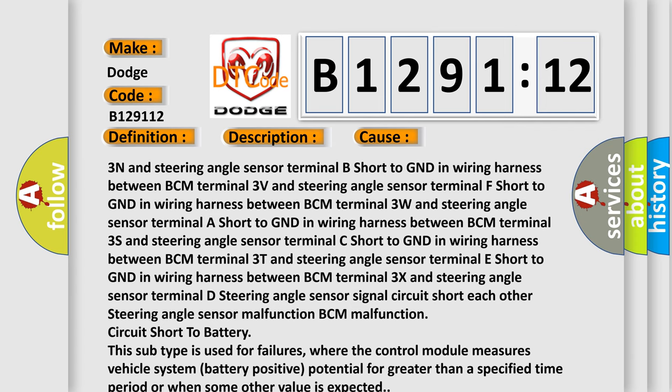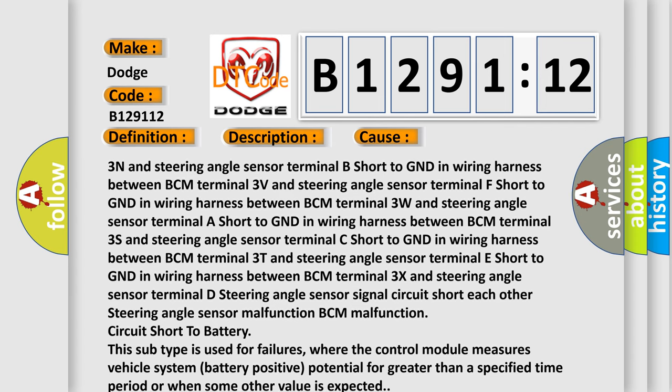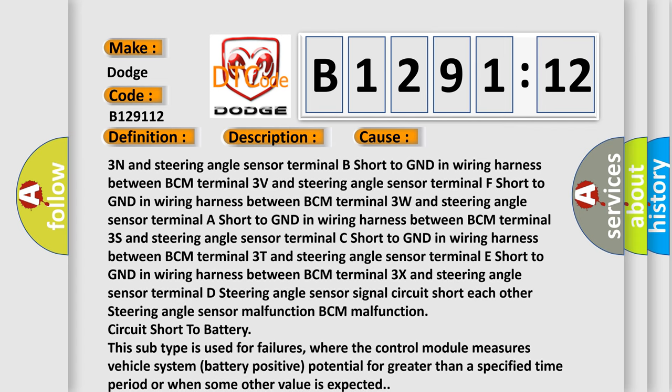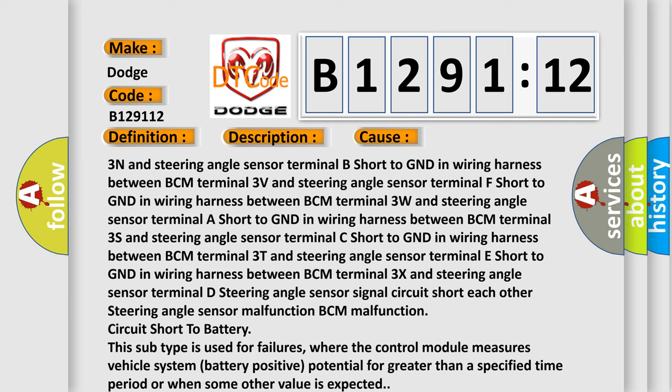Short to GND in wiring harness between BCM Terminal 3X and steering angle sensor terminal D. Steering angle sensor signal circuit short to each other. Steering angle sensor malfunction. BCM malfunction. Circuit short to battery. This subtype is used for failures where the control module measures vehicle system battery positive potential for greater than a specified time period or when some other value is expected.